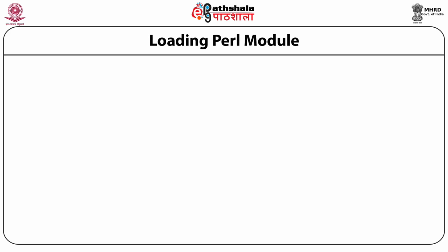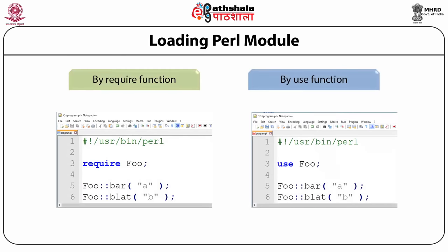To load a Perl module, Perl provides two inbuilt functions: require and use. The syntax for require is: require Foo; and to access a function of the package, write: Foo::bar or Foo::black. Similarly, the use function works for loading Perl modules: use Foo; and to access the module's functions, type the package name followed by double colon and the object or function name.